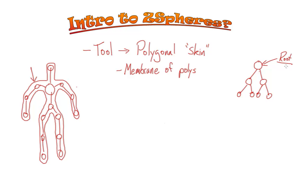As of more recent versions of ZBrush, you can create an entire model — an entire biped, monster, or whatever you want to make — from a single Z-Sphere. That's really impressive, and we'll talk about techniques for doing that a little bit later.